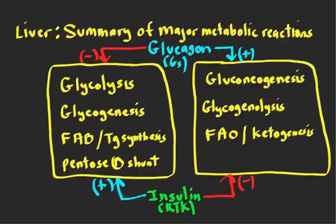On the flip side, when there's lots of insulin around during the well-fed state, all of these fasting-state processes are turned off, including ketogenesis, and the anabolic reactions are turned on. The take-home message is that ketogenesis is very active during fasting, when glucagon levels are high and insulin levels are low.